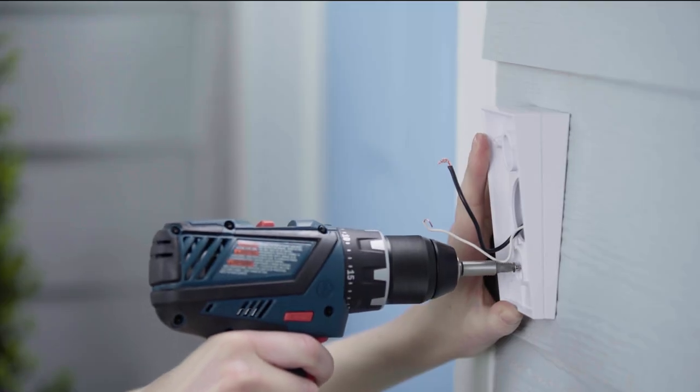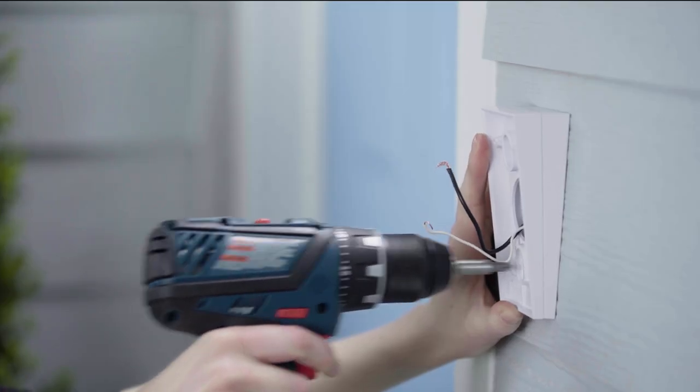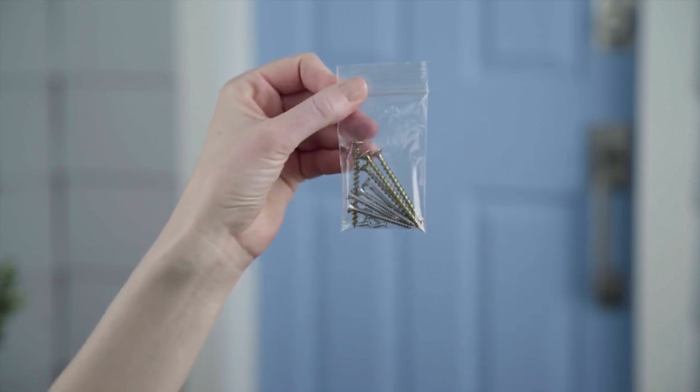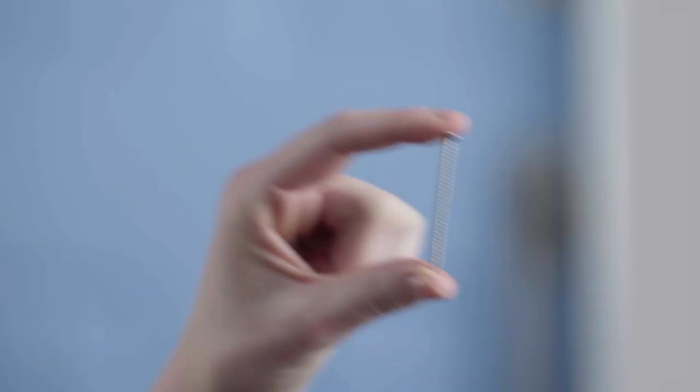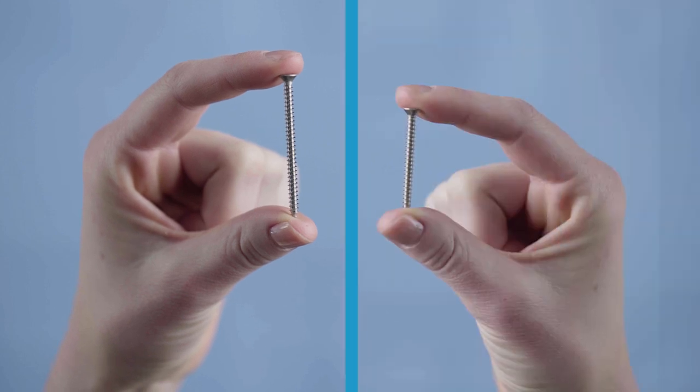If you're installing on wood, you can screw the Wedge Kit directly into your wall. We've included a variety of screws with your Wedge Kit. Use the longer screws for stacking multiple wedges and the shorter screws for installing only one wedge.